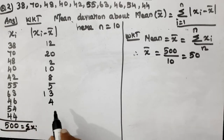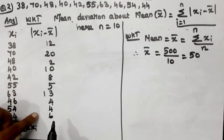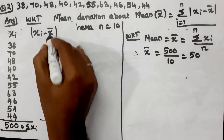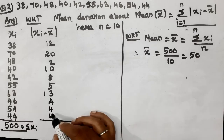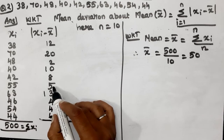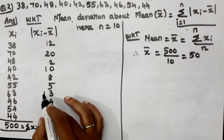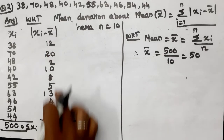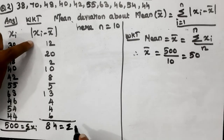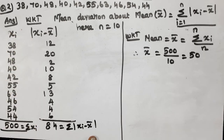Continuing the deviations: 54 minus 50 = 4, and 44 minus 50 = -6. Since we take absolute values, negatives become positive. We add all the absolute deviations to get the summation of |x_i - x_bar|. The total summation of |x_i - x_bar| equals 84.